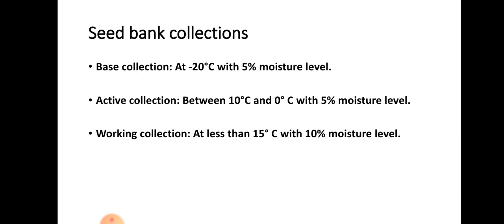In active collections, germplasm accessions are stored between 0 to 10 degrees Celsius with 5% moisture level. These are stored for a medium duration of about 10 to 15 years, even up to 30 years, and are used for evaluation, regeneration, research, multiplication, and distribution of accessions when needed.